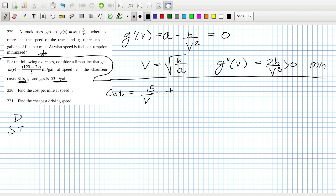So I'm assuming the reciprocal then is gallons per mile. Gallons per mile will be 5 over 120 minus 2v, times 3.5. So that would be 17.5. Okay, and then 331.